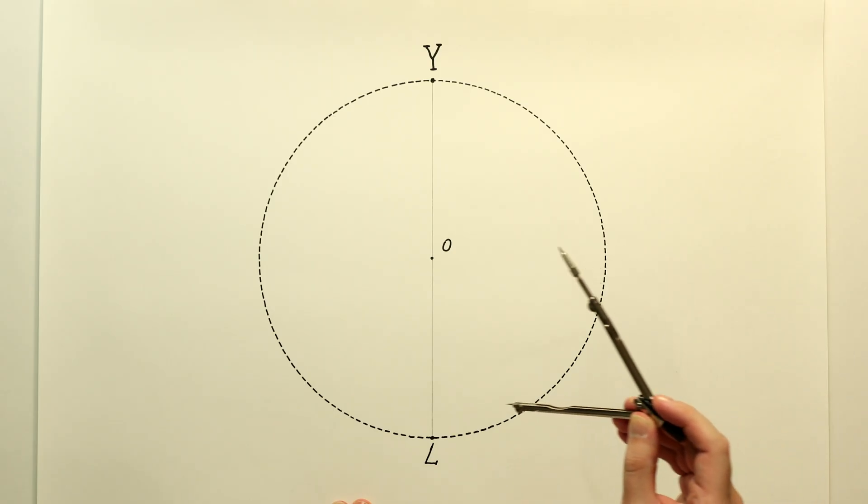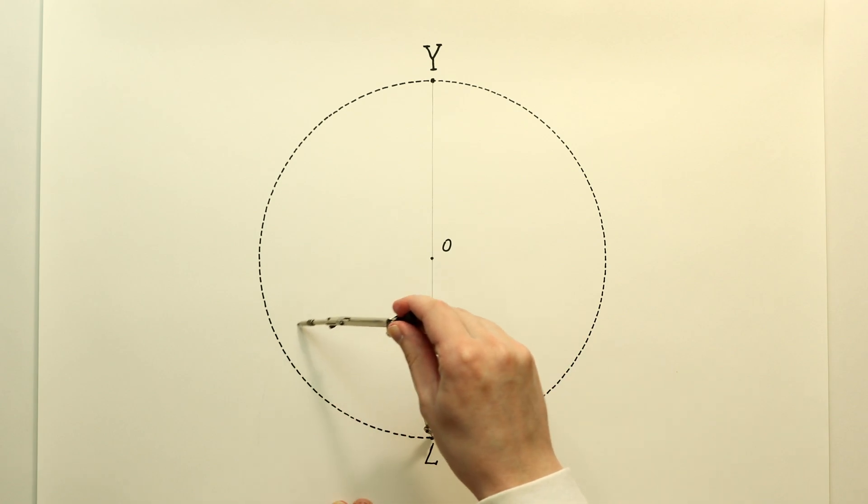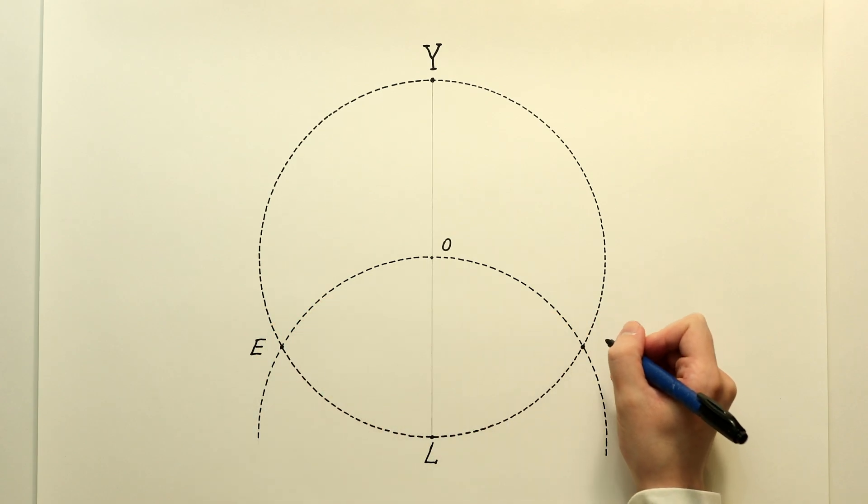Then we need to set the radius on the compass equal to the radius of the given circle and draw a circle arc of such a radius with the center in point L. After completing these steps, a pair of new intersection points with the circle will appear.